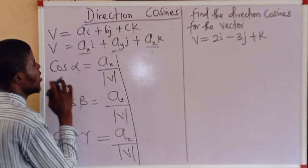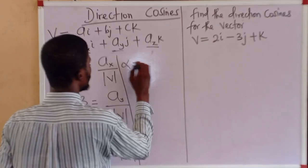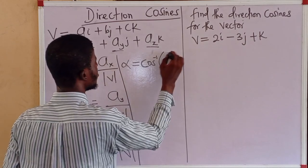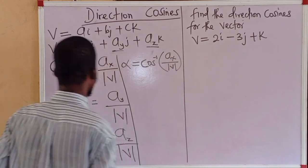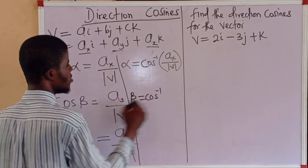From here now, alpha is the direction angle. So, alpha is equal to the cosine inverse of this. Also, beta is the cos inverse of this.